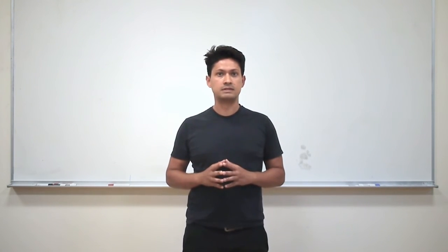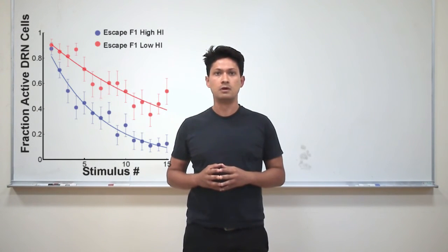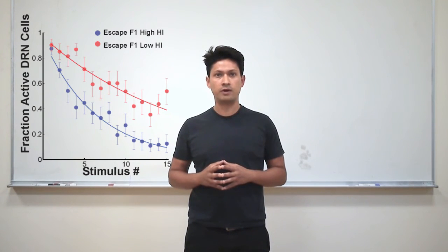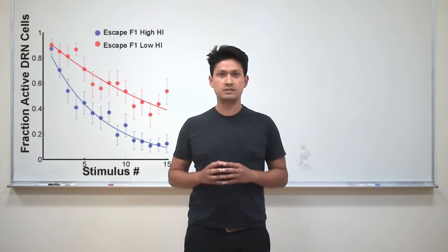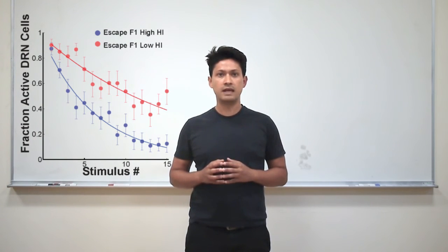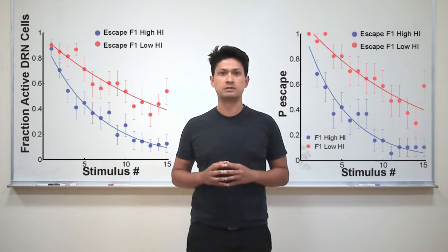Fourth, the progeny of animals selected for low habituation had higher levels of sound-induced activation of dorsal raphe neurons compared with the progeny of animals selected for high habituation. In other words, differences in sensory-induced activation of the dorsal raphe co-segregate with individual differences in the habituation of the acoustic startle response.